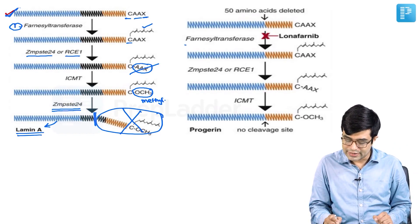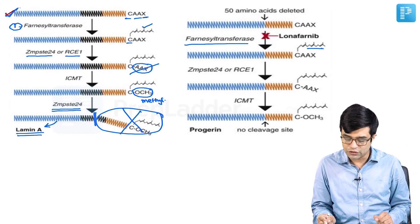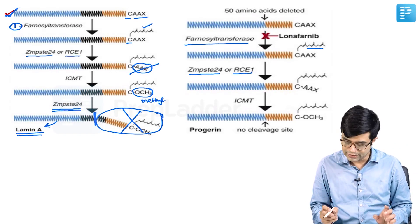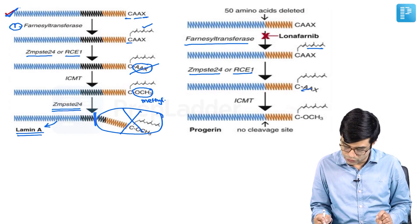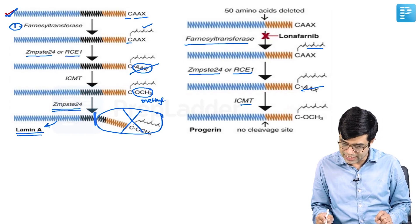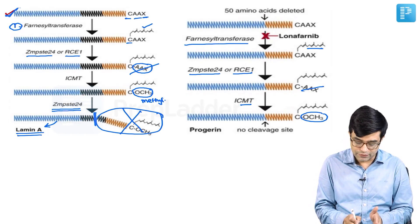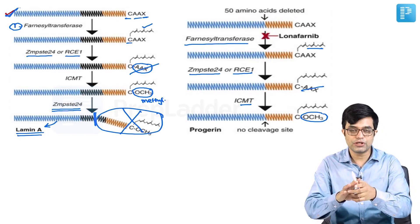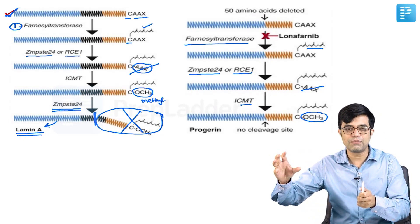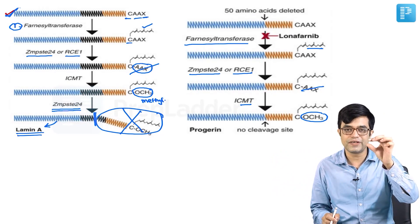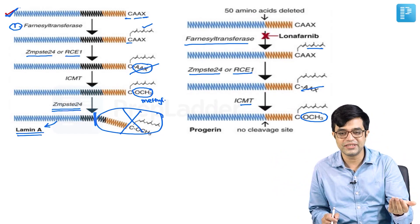Farnesyl transferase enzyme will act and attach the farnesyl group. Then ZMPSTE24 or RCE1 will act and remove the terminal part. Then methyl transferase will act and attach a methyl group. But the terminal cleavage which was supposed to remove that farnesylated segment, that part is missing because that black segment 50 amino acid part is just not there.